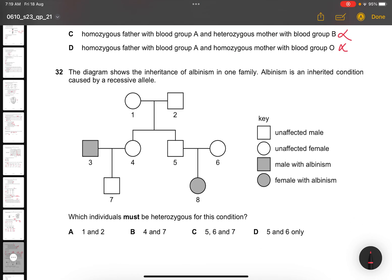Question 32. The diagram shows the inheritance of albinism in one family. Albinism is an inherited condition caused by recessive allele. This is a pedigree diagram. Which individuals must be heterozygous for this condition? Heterozygous. Since this has been affected, this has got to be heterozygous already. So the answer is 5, 6, and 7. So it's all hidden. It's basically something like Aa and Aa. So when they bind, you can get AA, Aa. You can get AA, Aa, then Aa, and aa. So here is the 25% chance. That's why 5 and 6 is in, and 7 will be the next one. So the answer is C.